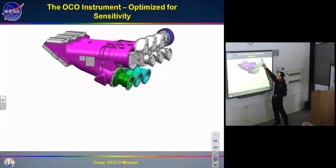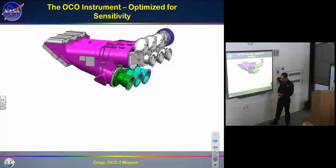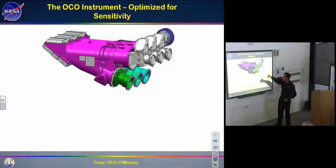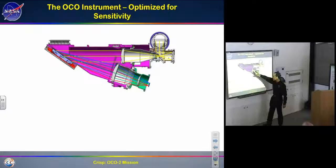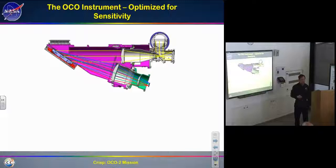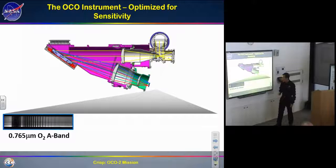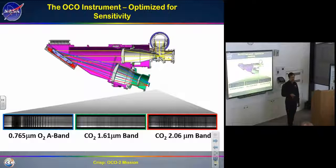The instrument is a three-channel grating spectrometer — three spectrometers stuck together with a common entry telescope. There are three channels: one for CO2 near 2 microns, one at 1.61 microns, and one at 0.76 microns for oxygen. It uses a simple grating spectrometer design — light from a telescope goes through a narrow slit, a collimator, hits a plane grating, and gets imaged onto a two-dimensional imaging sensor. This produces high-resolution spectra of the oxygen A-band, the 1.61 micron CO2 band, and the 2.06 micron CO2 band.